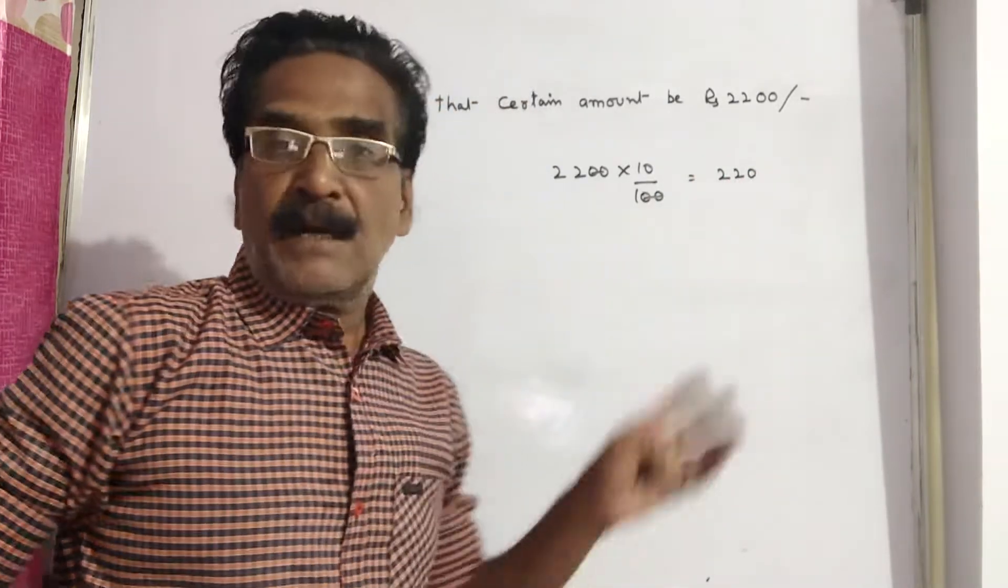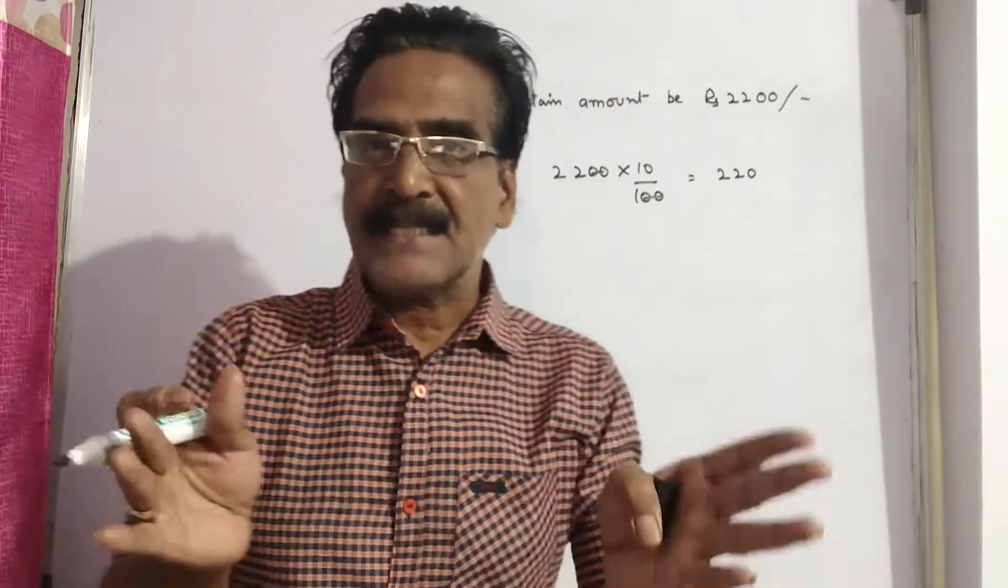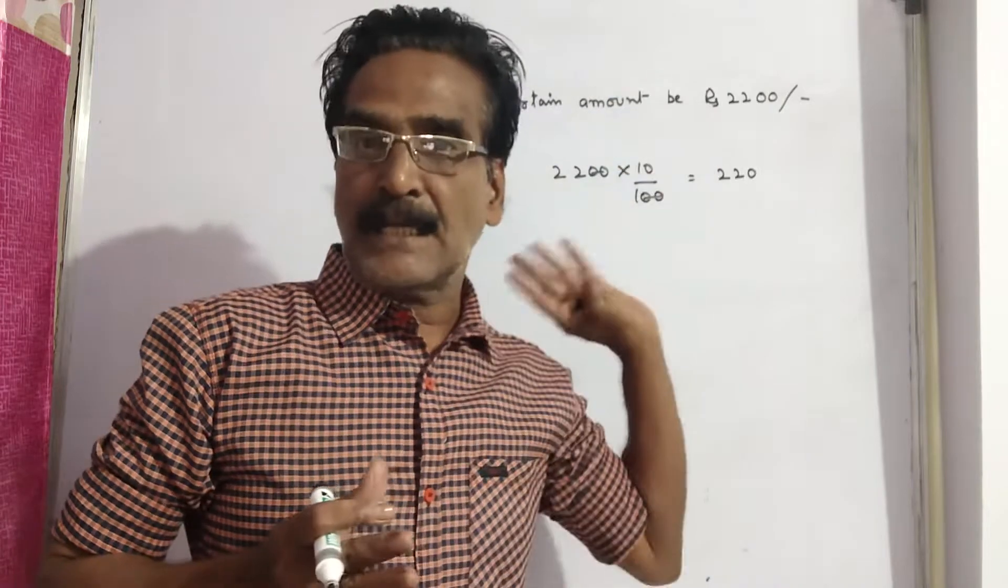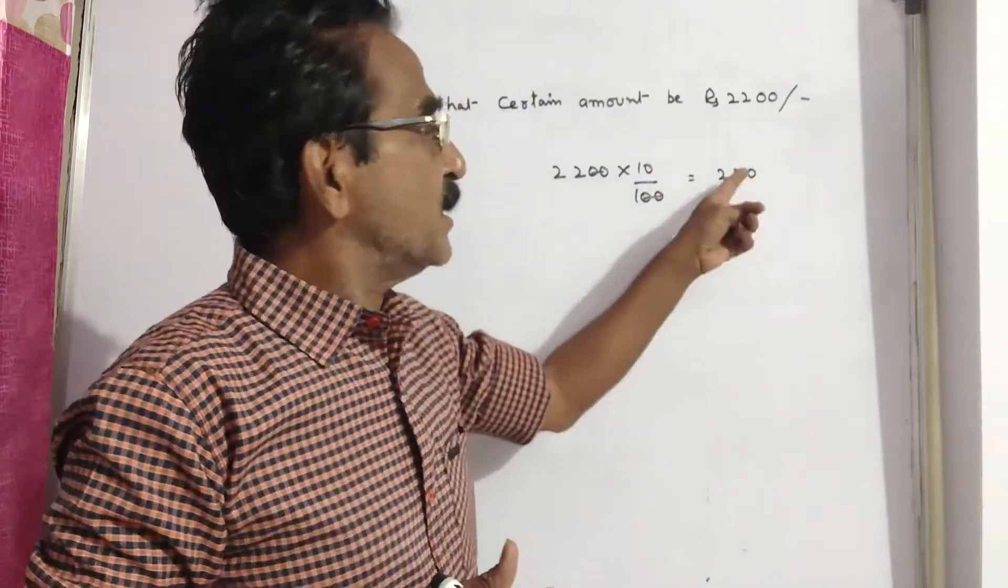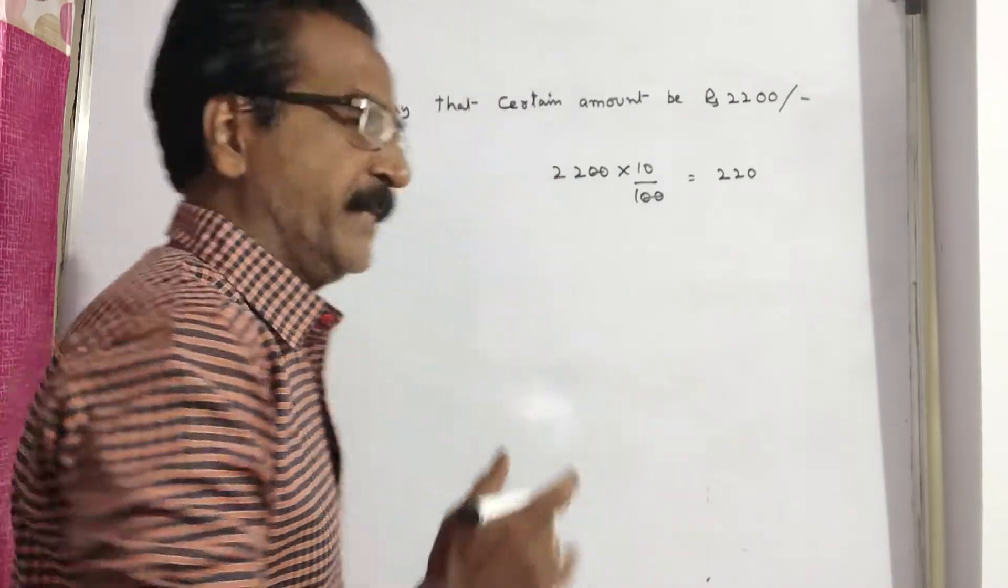Because of this reduction, a person is able to get 22 kg more sugar. That means this 220 rupees is the reduced price of 22 kg sugar.